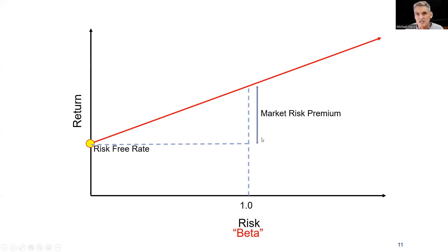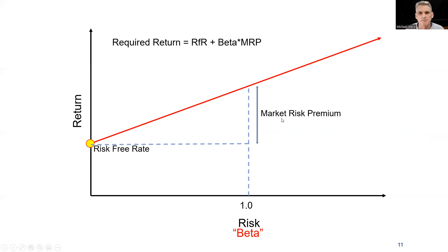If we know what the market risk premium is — the extra return on average that you get for investing in the stock market over lending your money to the government, which is about 6% — then we can put this all together. Here is a formula: the required return for investors, based on the capital asset pricing model, is your risk-free rate plus beta — how far you are on the risk axis — times the market risk premium, which is the slope of the line.